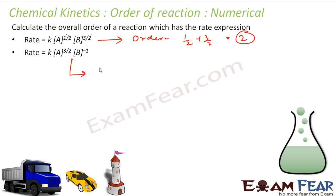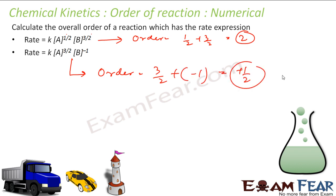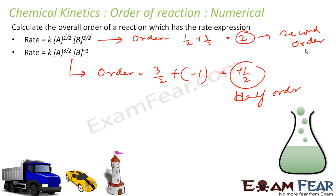For another reaction with powers 3/2 and −1, the order is 3/2 + (−1) = 1/2. That means it is a half order reaction. So one is a second order reaction and the other is a half order reaction.